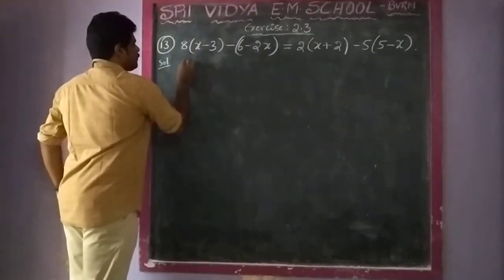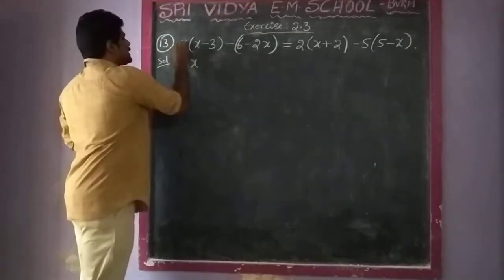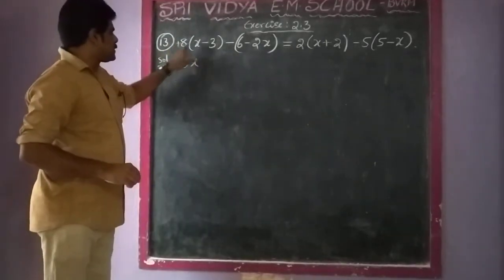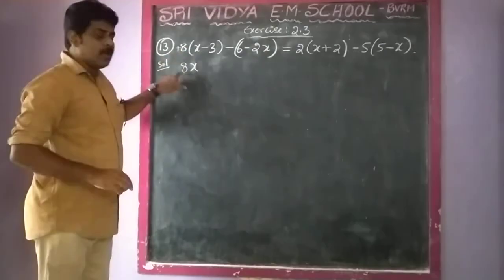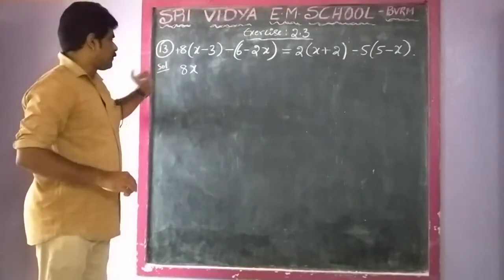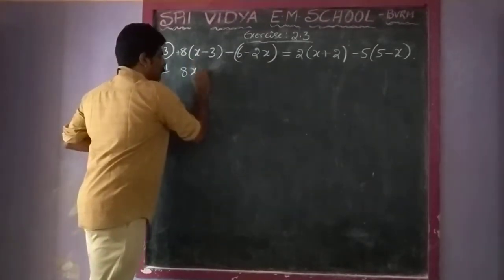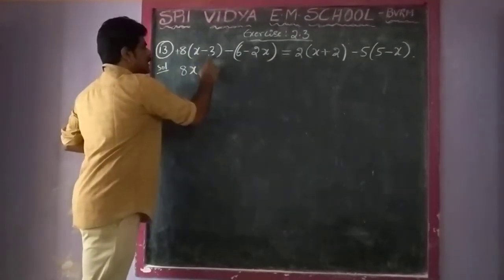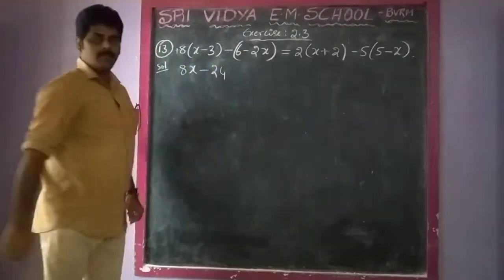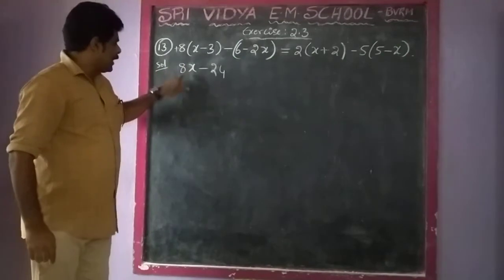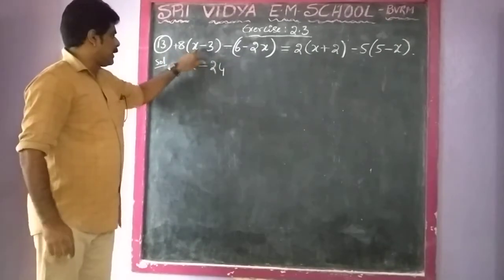8 into x gives 8x. Plus sign, so plus into plus gives plus. 8 into x is 8x. Then plus into minus gives minus. 8 into 3 gives 24. So we have 8x minus 24.